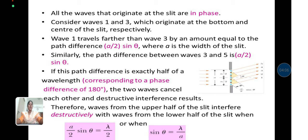Consider waves 1 and 3, which originate at the bottom and center of the slit respectively. The path difference is written as a/2 sin theta, where a is the width of the slit, and the path difference between waves 3 and 5 is also a/2 sin theta.